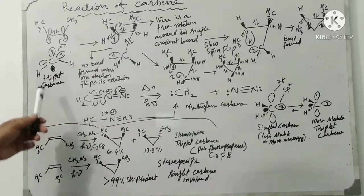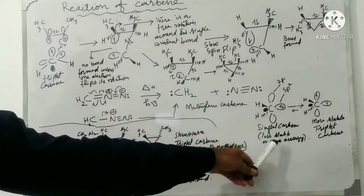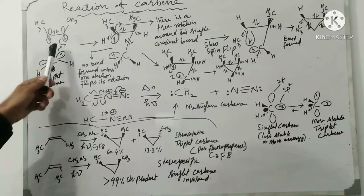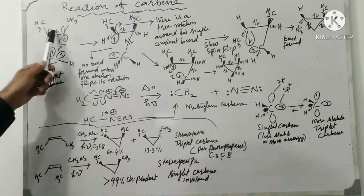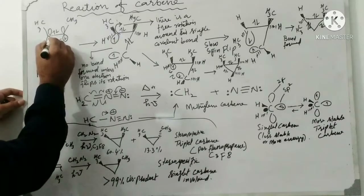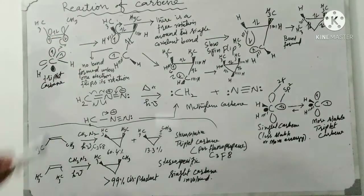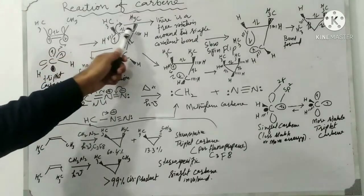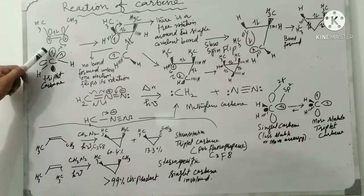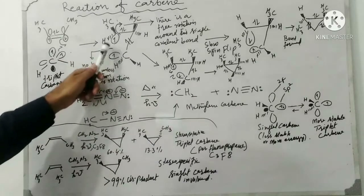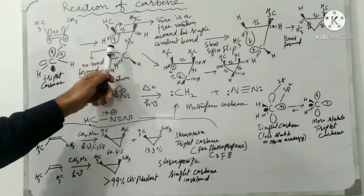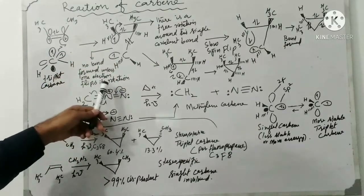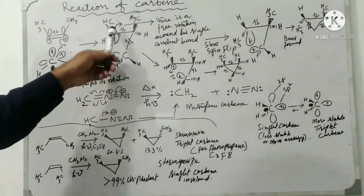When triplet carbene reacts with cis-2-butene, this is a free radical reaction. The triplet carbene has two electrons with the same spin, so they cannot make a single covalent bond unless one electron flips its spin. One electron from the carbene makes a new sigma bond with one carbon of the double bond. However, the two electrons on the carbene carbon have the same spin, so forming the second sigma bond requires one electron to flip — this is the slow step.